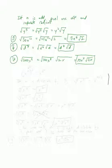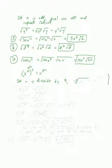Now briefly, before we're done, let's discuss cube roots since they come up every so often. When you cube a variable, you multiply its exponent by 3 — this is the power-to-a-power rule. So it stands to reason that if n is divisible by 3, the cube root of x to the n is just x to the n divided by 3.